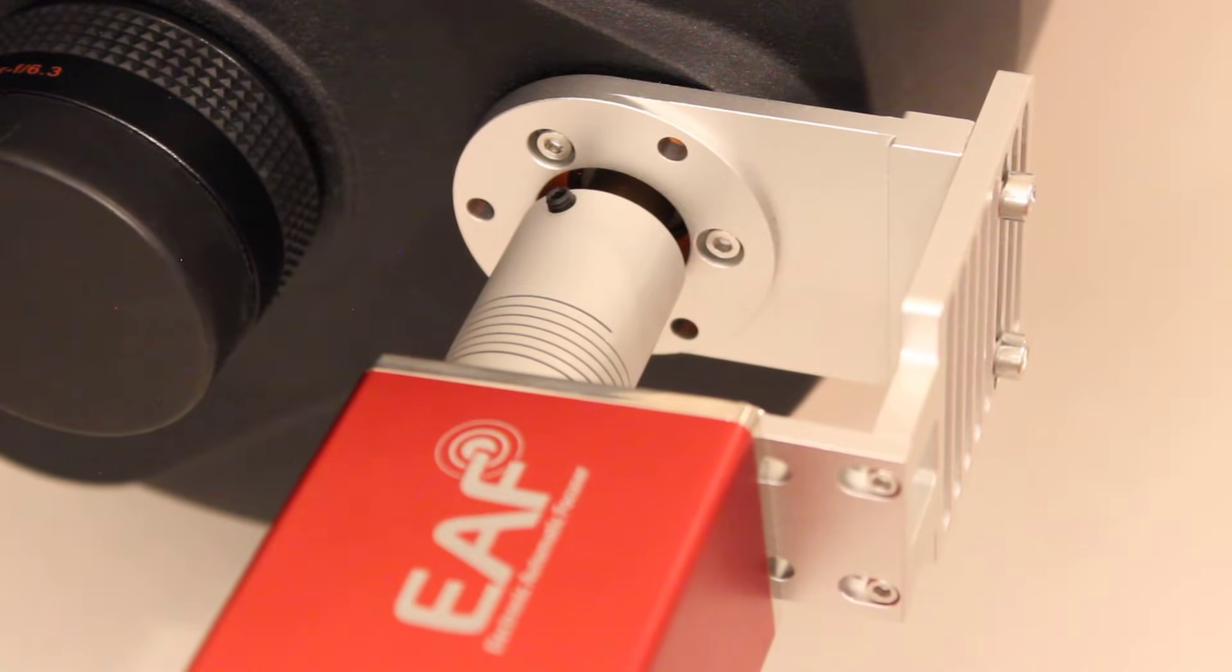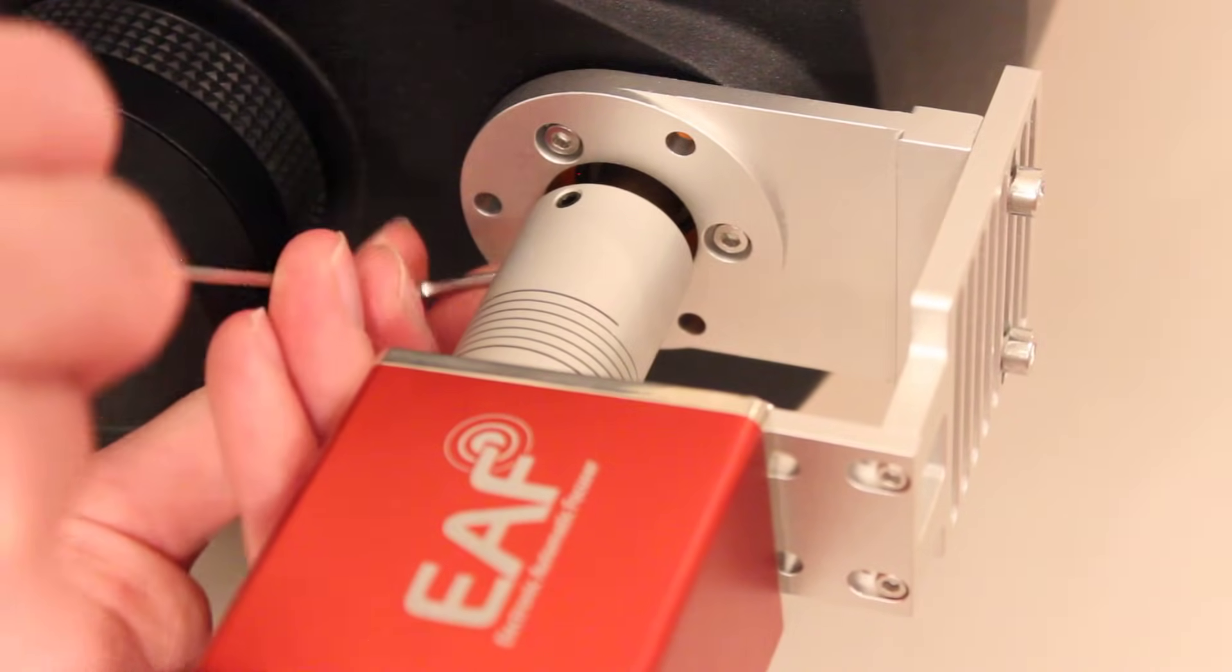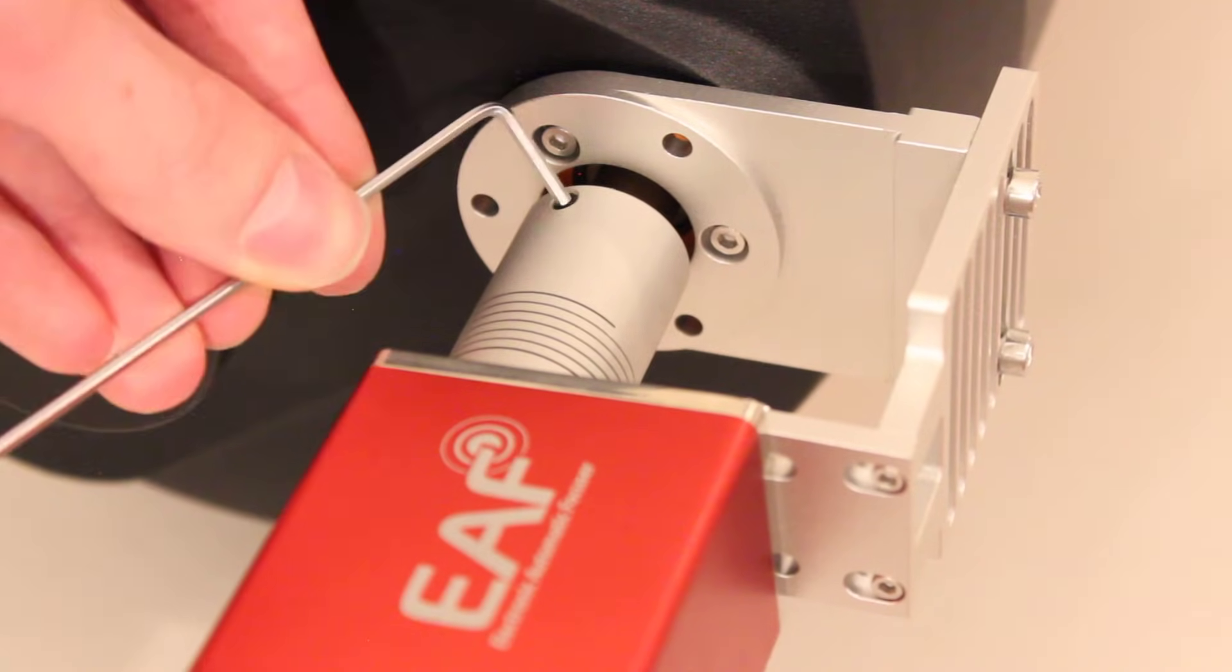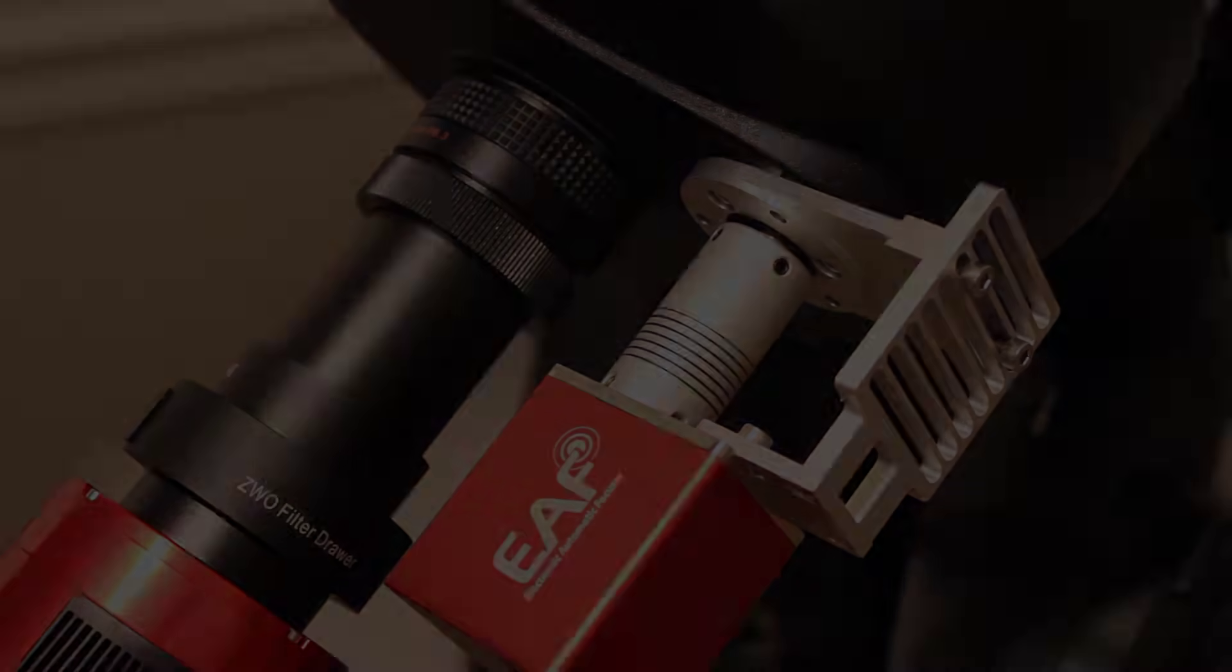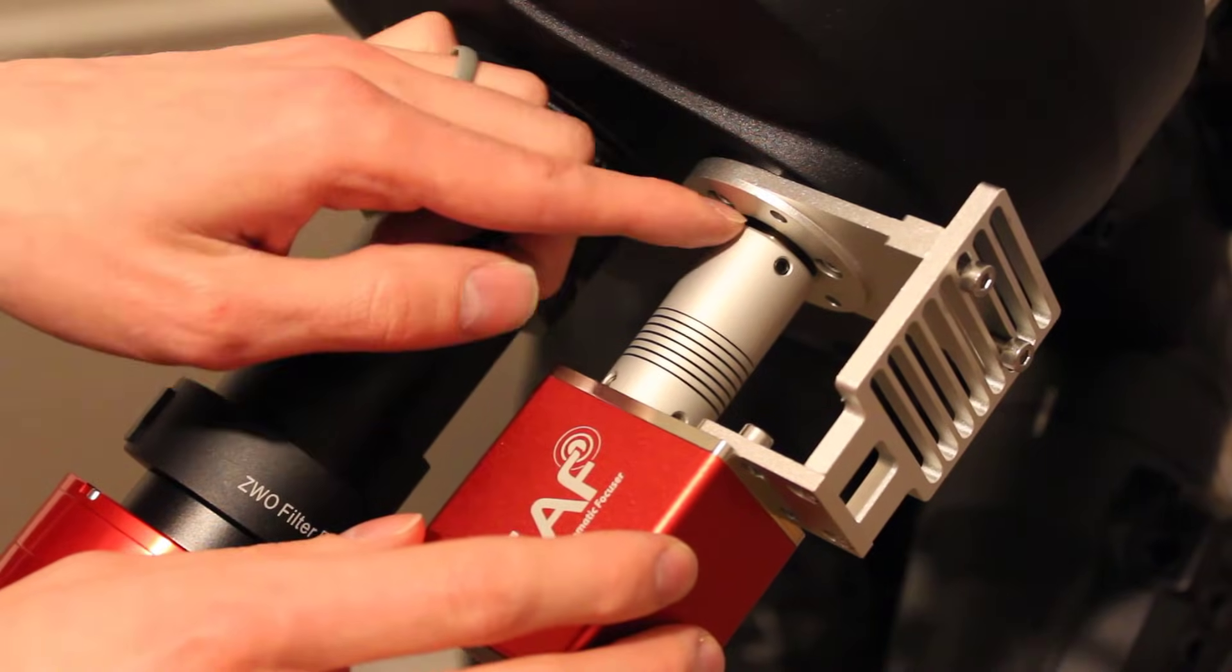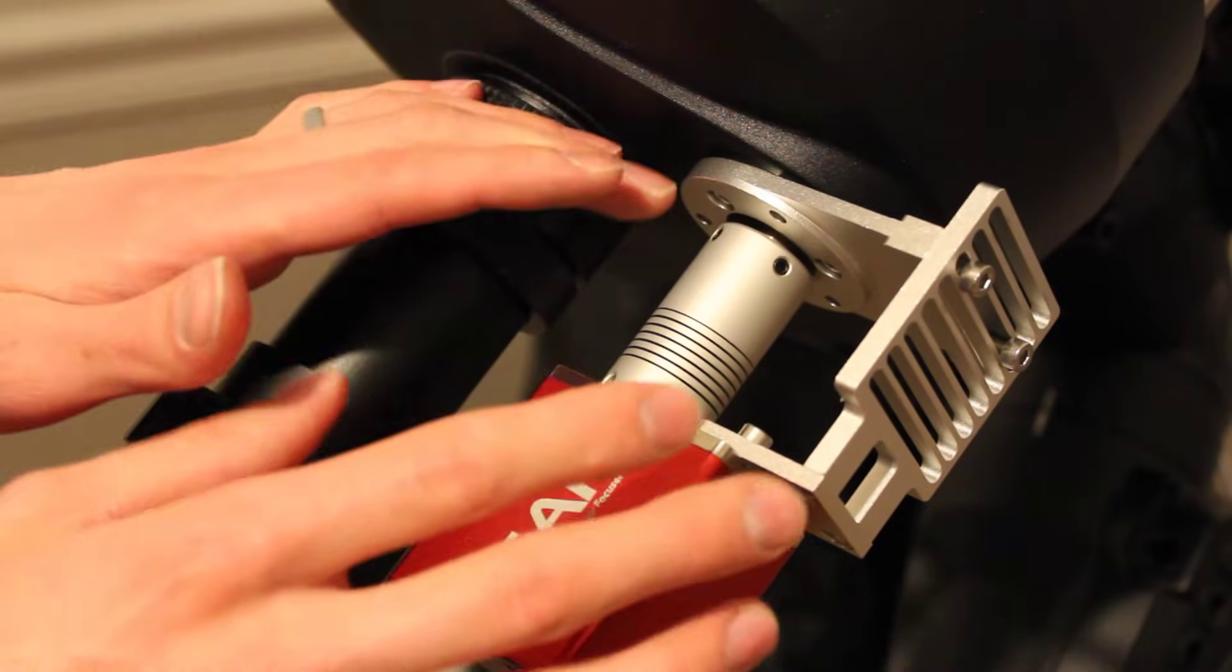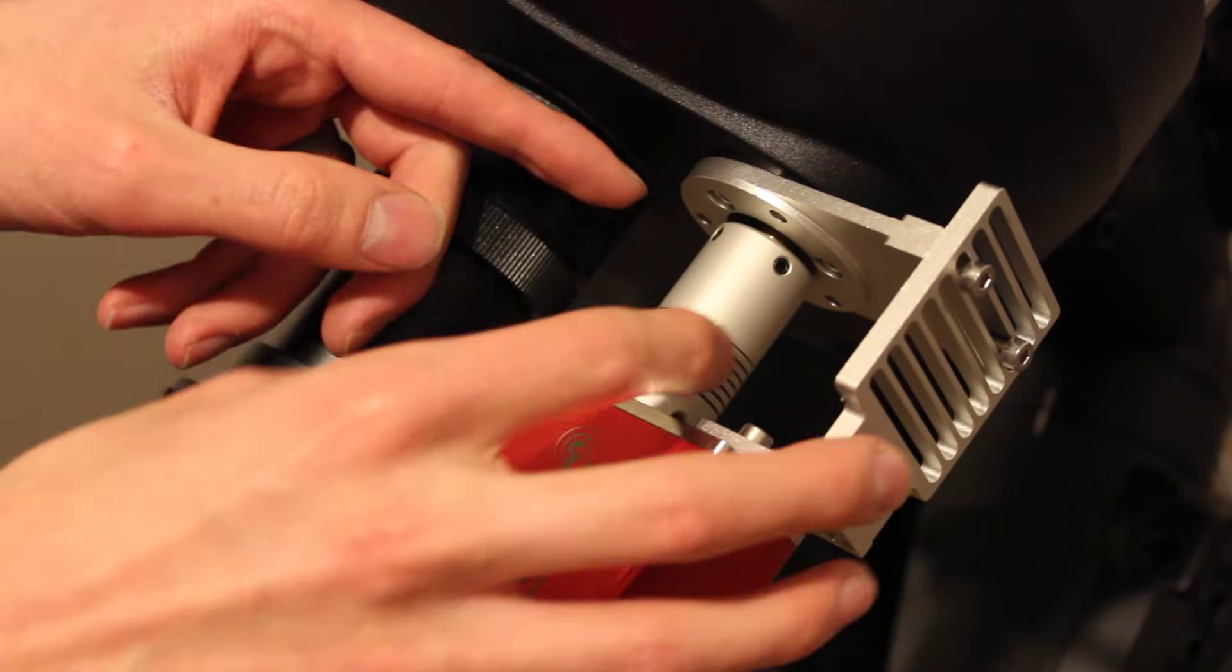And the final step is to just tighten these two grub screws. Now, with the focuser and the bracket installed to the telescope, you'll notice that there's a little gap between the coupler and the end of the focuser plate here. That is not a problem whatsoever because the coupler is still grabbing the focuser shaft, so it's not a big deal.